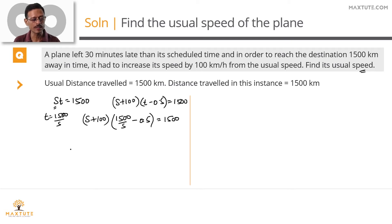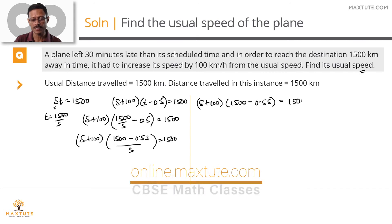Take s to be the common denominator. So s plus 100 into 1500 minus 0.5 s divided by s is equal to 1500. Cross multiply this s and expand the term on the left hand side. Let's do that here. s plus 100 into 1500 minus 0.5 s. This is equal to 1500 s. We cross multiplied this s.